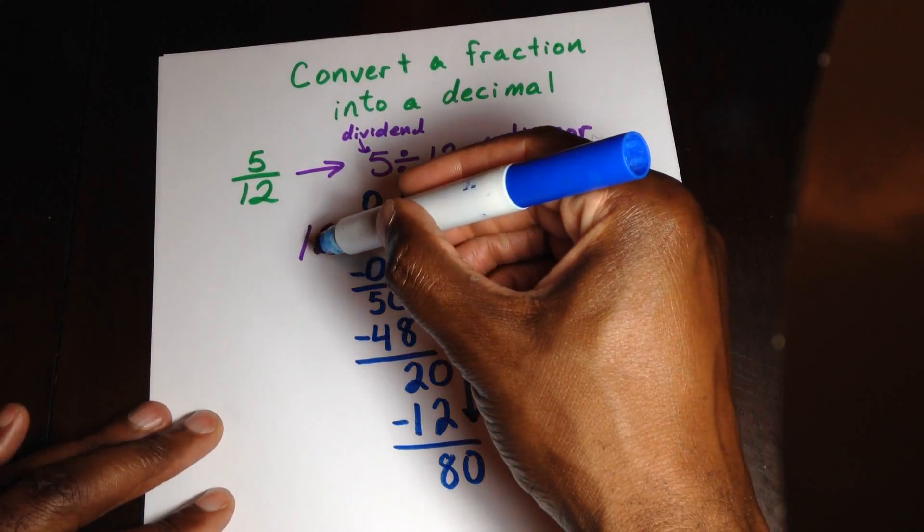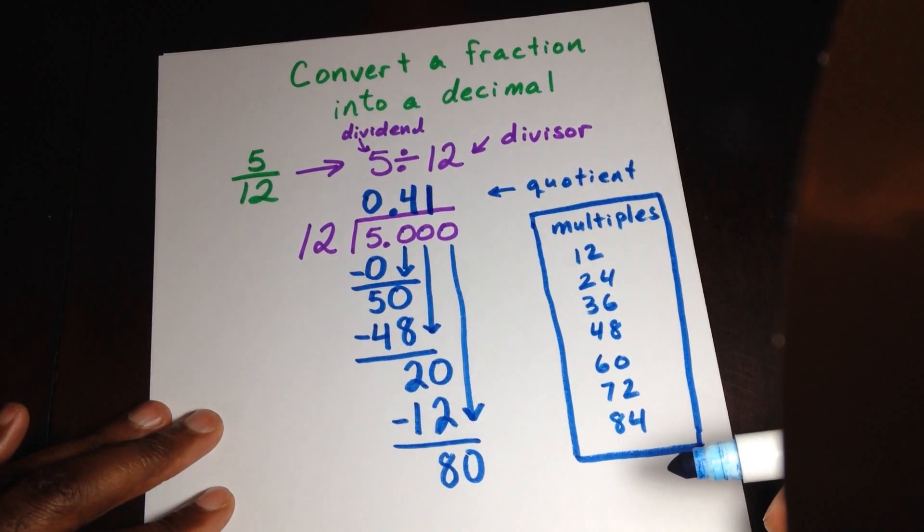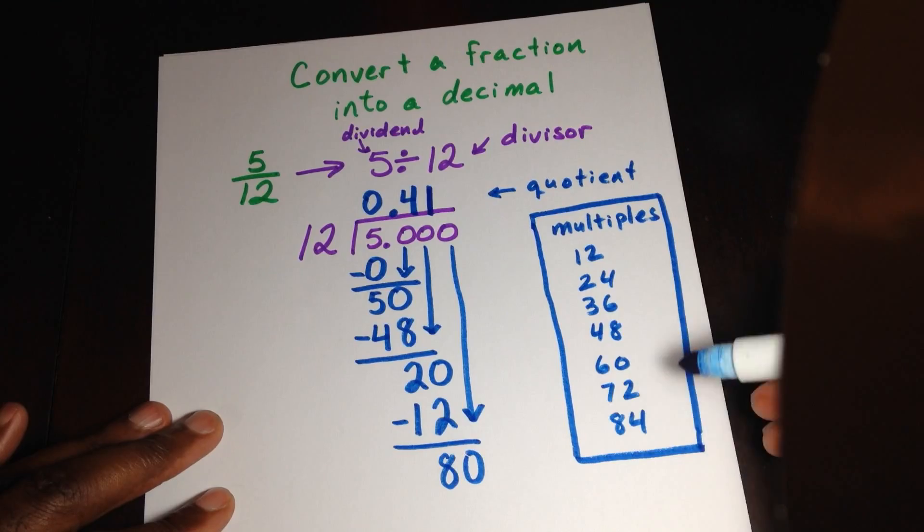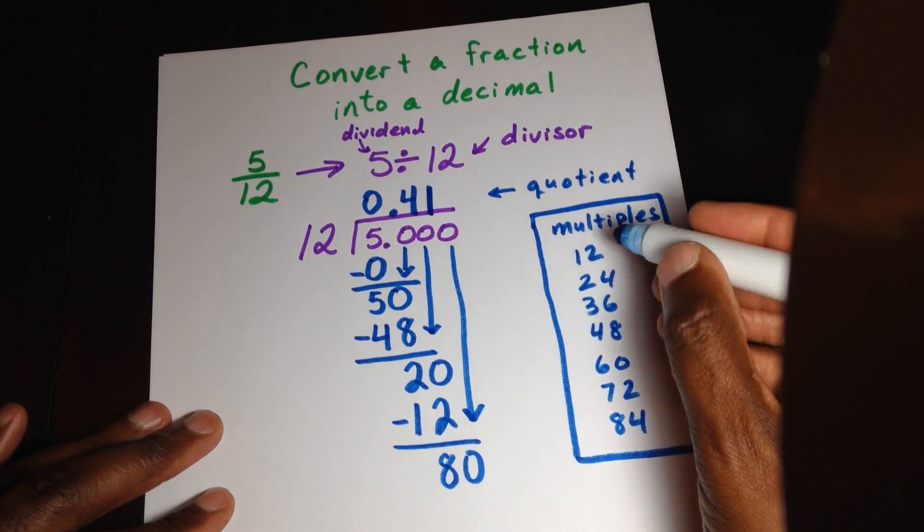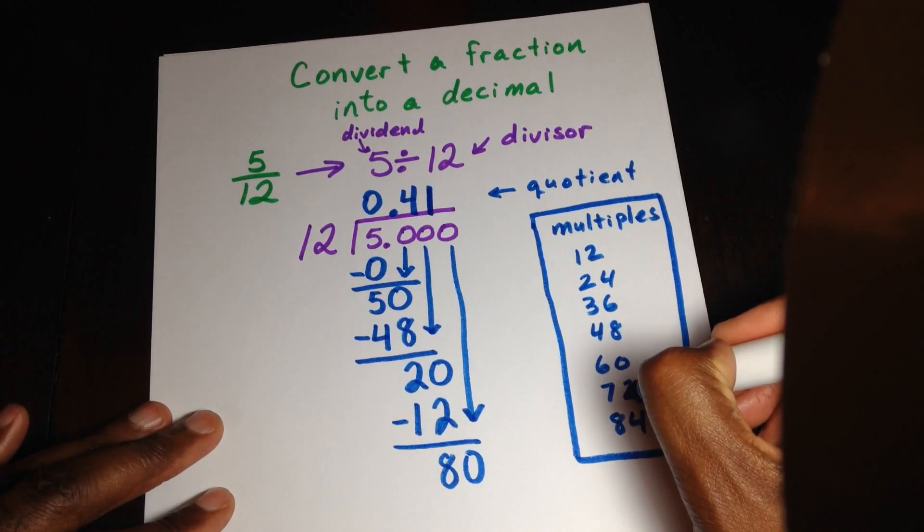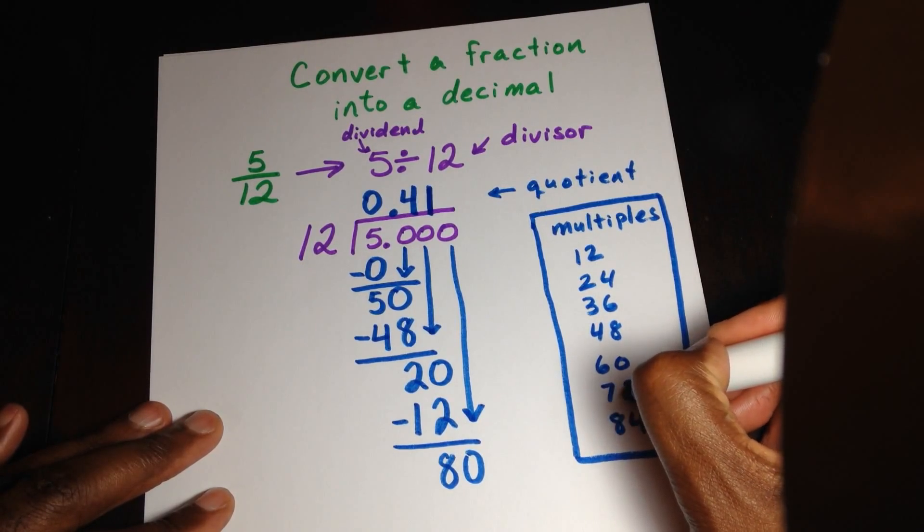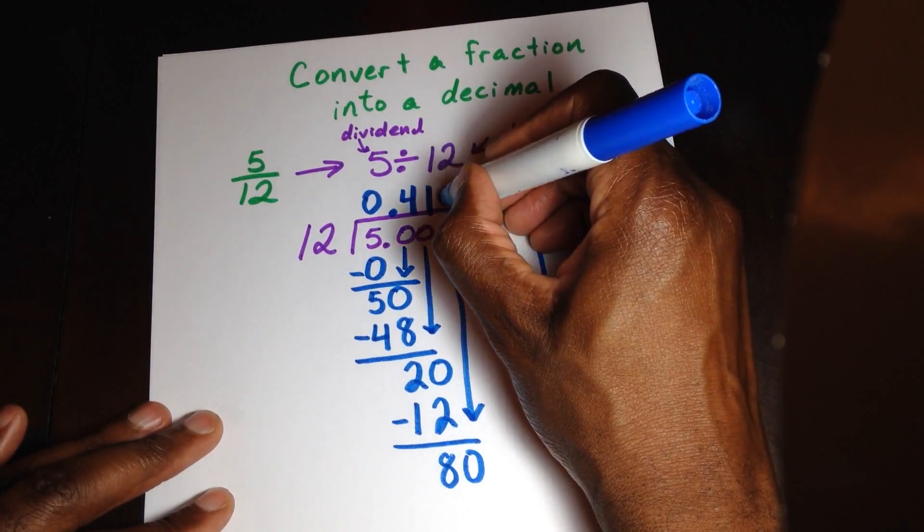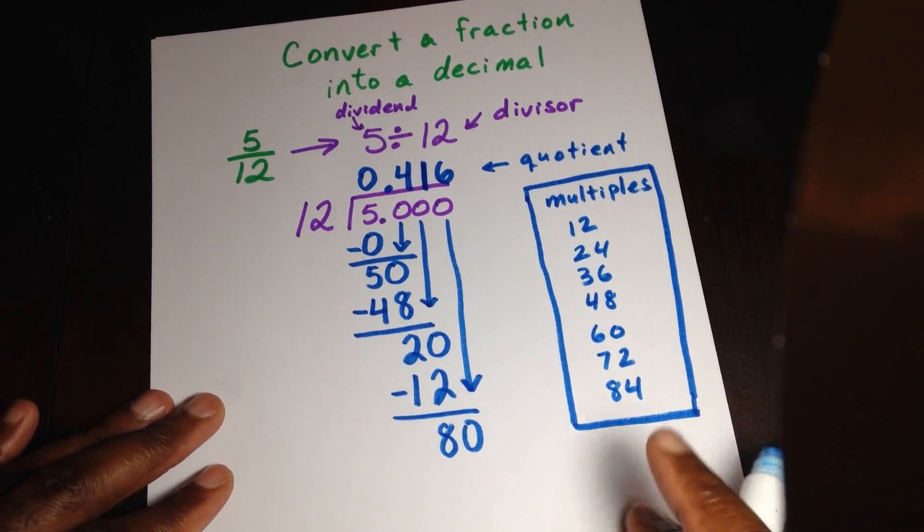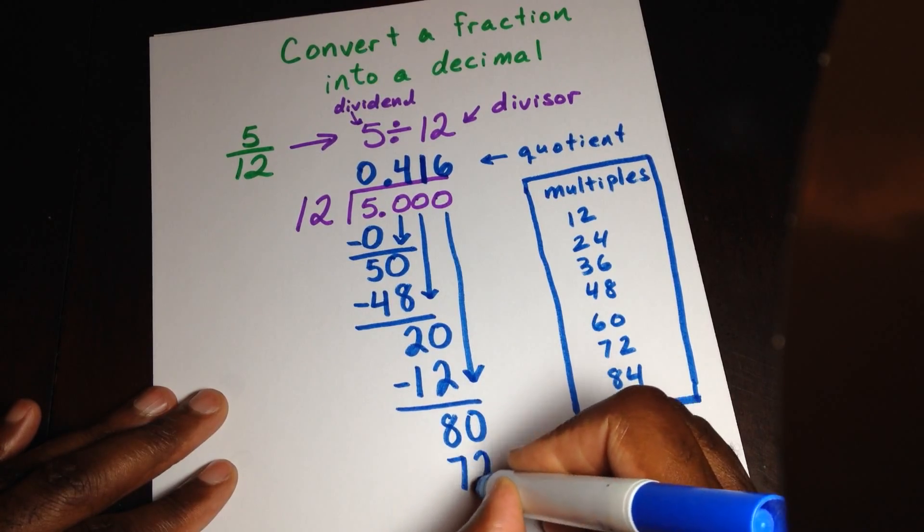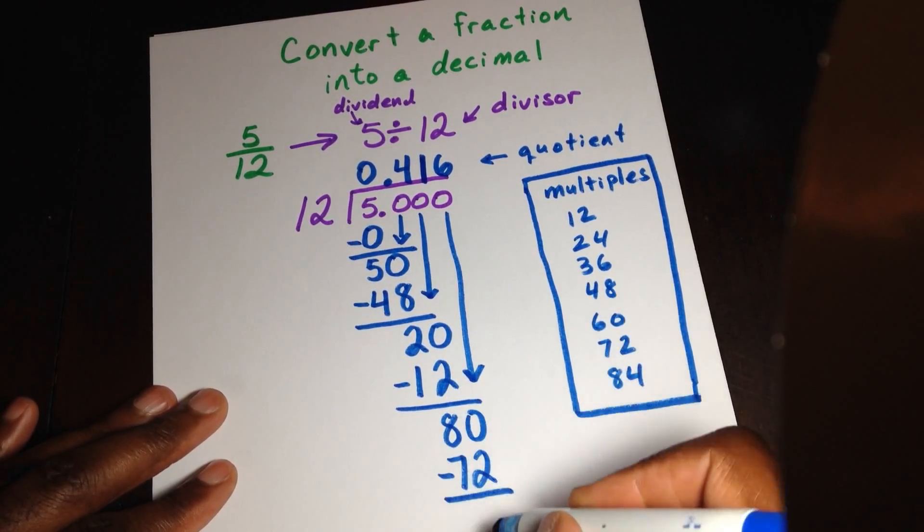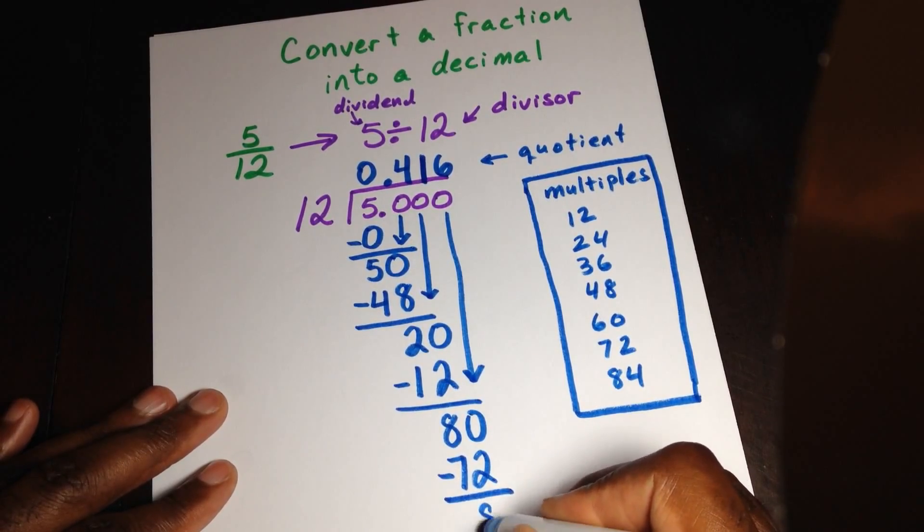So now I want to see how many sets of 12 can go into 80. I'm looking at my multiples. Close to the number 72. So what I'm going to do is that's going to be 1, 2, 3, 4, 5, 6 sets. 6 times 12 is what gives me 72. So I'm going to put 6 here. And again, we said 6 times 12 is 72. So I write 72 down here. And when I subtract 80, take away 72, I get 8.